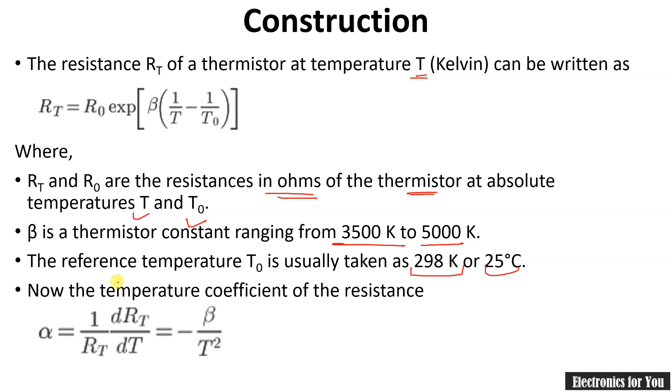The temperature T0 is usually chosen as 25°C or 298 Kelvin. The temperature coefficient of resistance can be given by: α = -β/T². If we put some values of T and β, then we will get α equal to minus 0.045°C. This is the construction of thermistor.